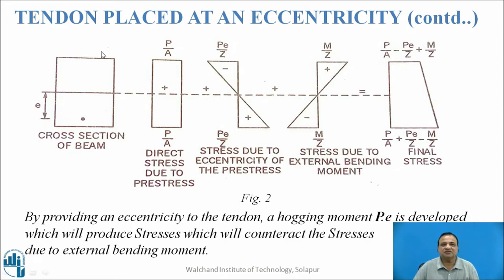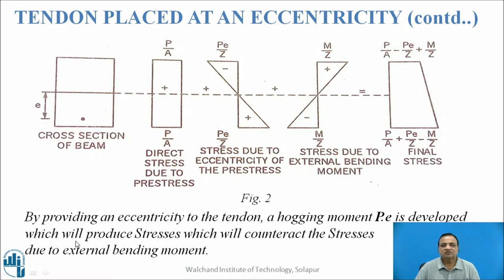If we show this with a sketch: we transfer P to the neutral axis giving P/A throughout, then P·E/Z gives tension at top and compression at bottom, and M/Z gives bending compression and bending tension. The algebraic sum is P/A minus P·E/Z plus M/Z at top, and P/A plus P·E/Z minus M/Z at bottom. By providing eccentricity to the tendon, a hogging moment P×E is developed, which will counteract the stresses due to external loading.